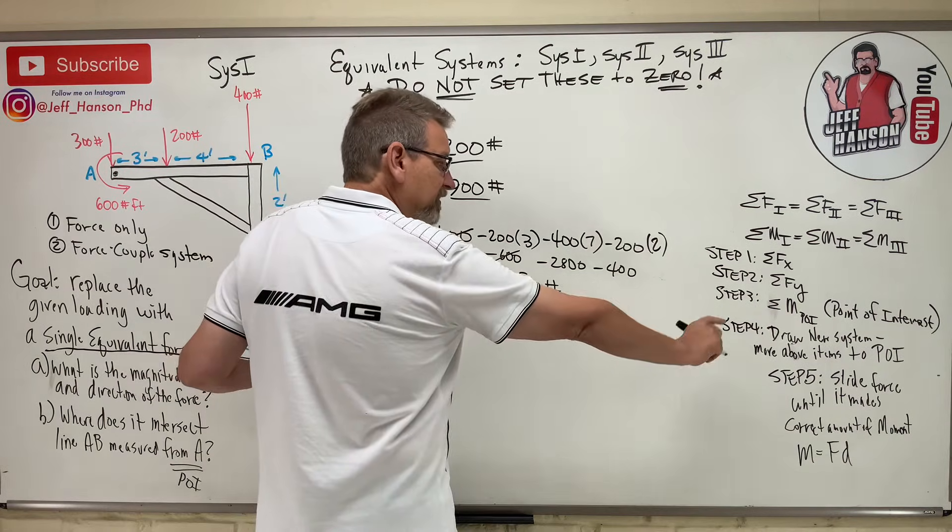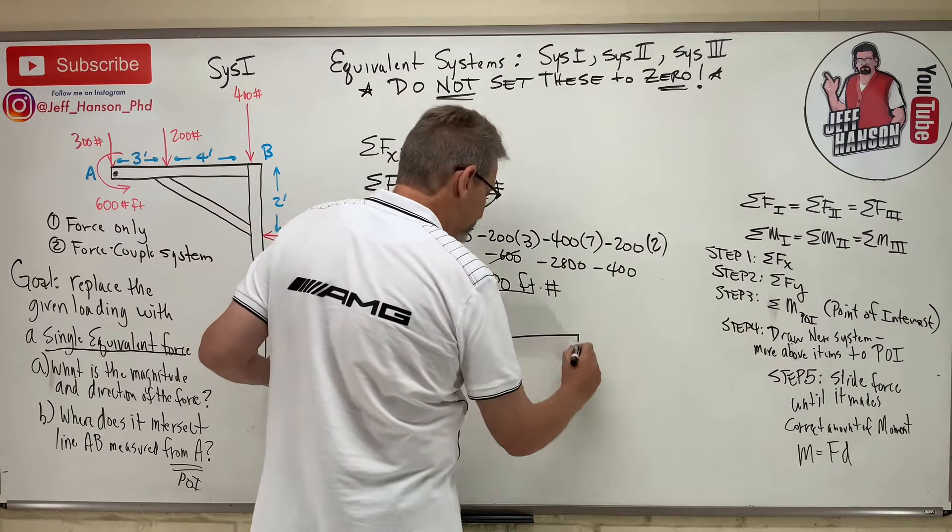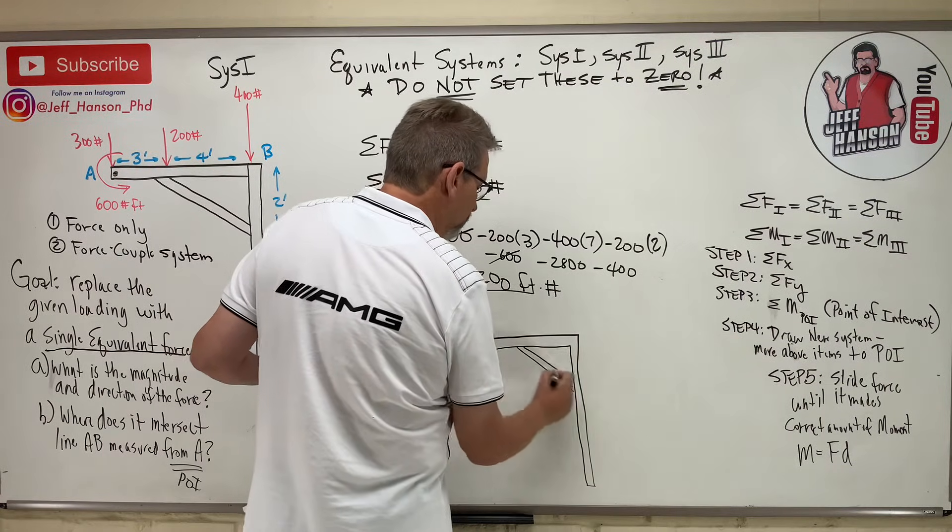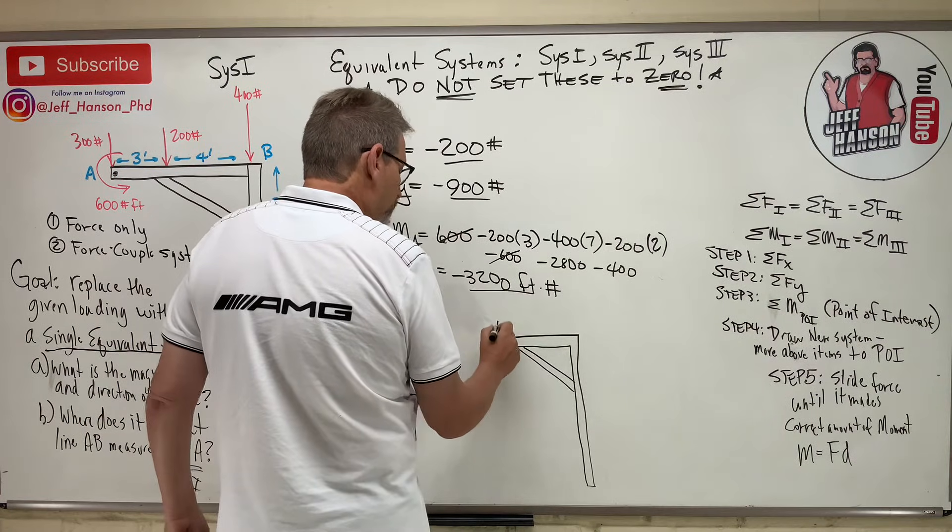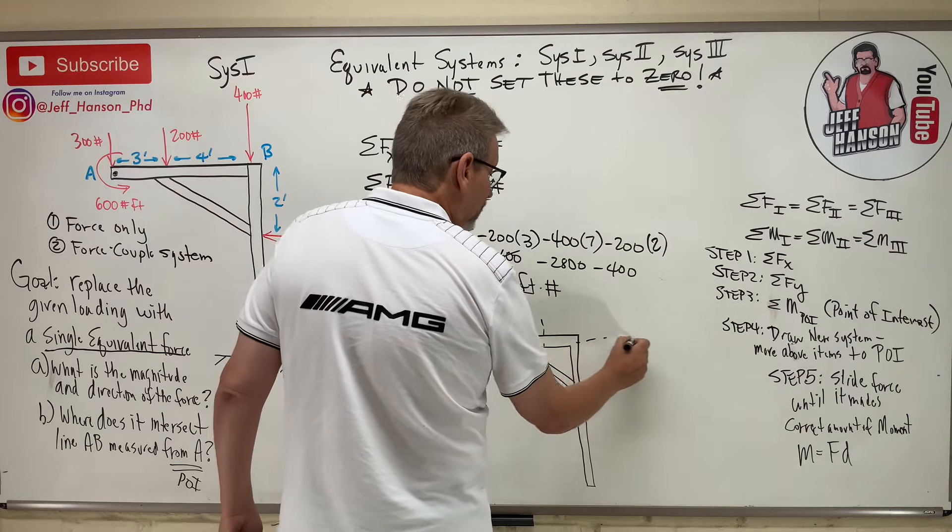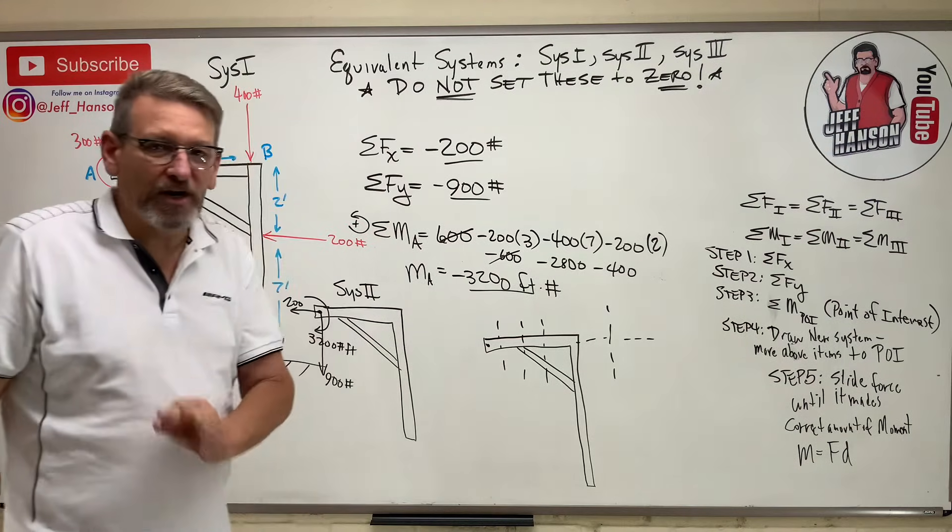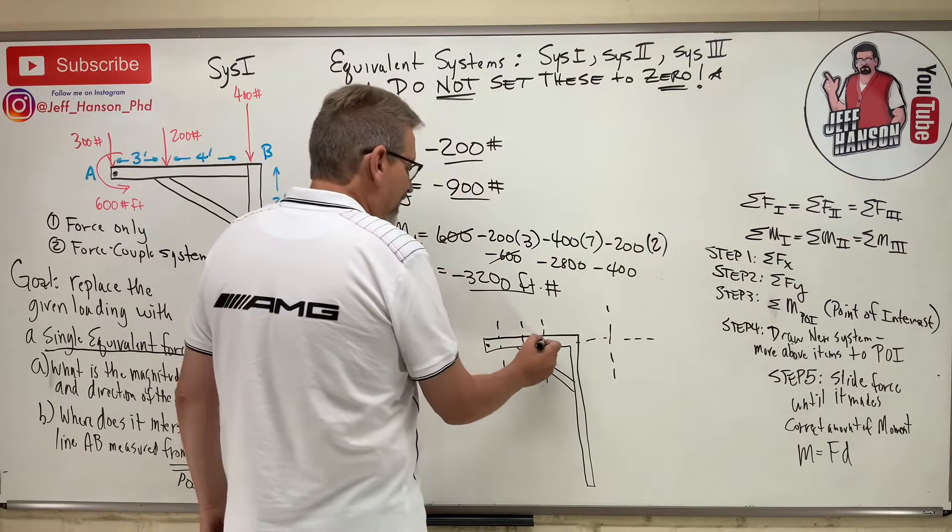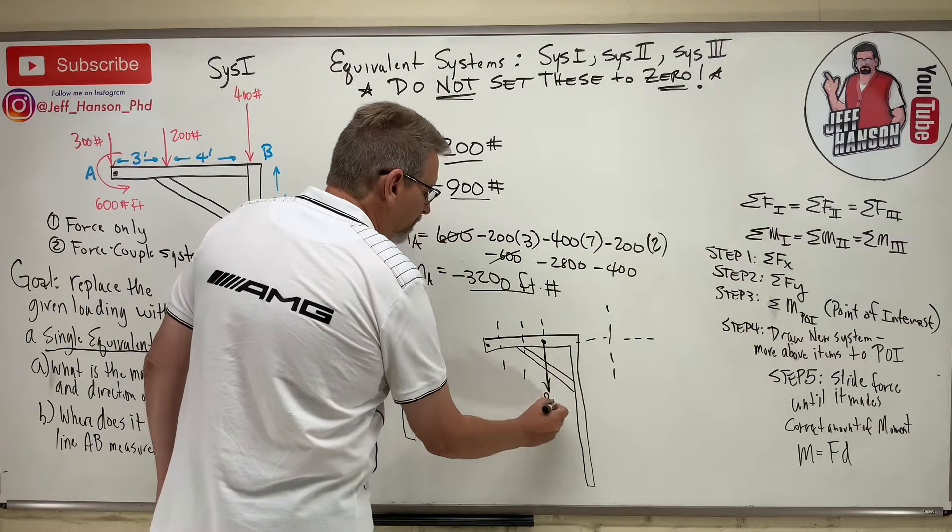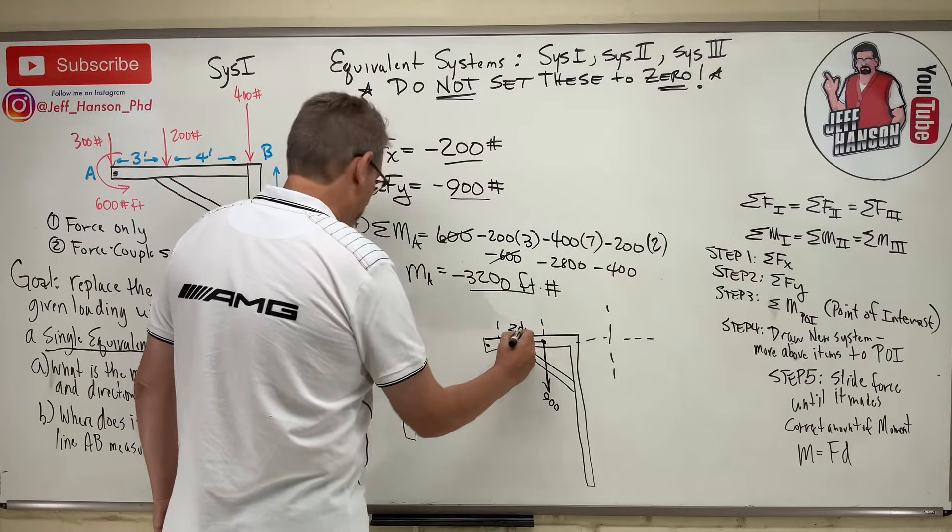So, it says, step 5. Slide the force until it makes the correct amount of moment. So, here we go. Here's our last system. Same deal. So, here's point A. So, we're going to start sliding. Do we slide it to there, or to there, or to there? Remember, it doesn't have to be on the part necessarily. So, let's say we slide it to right here.